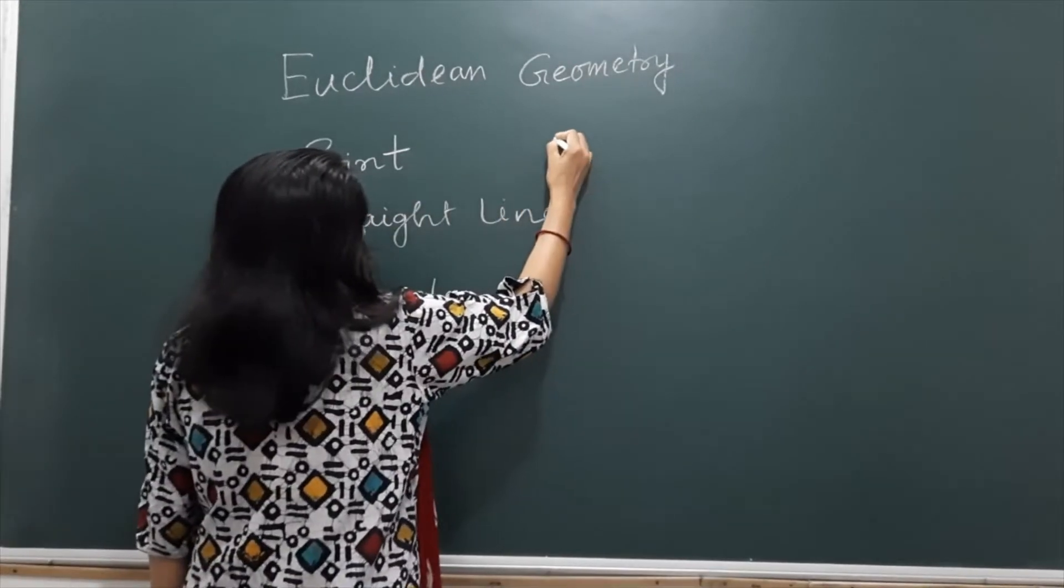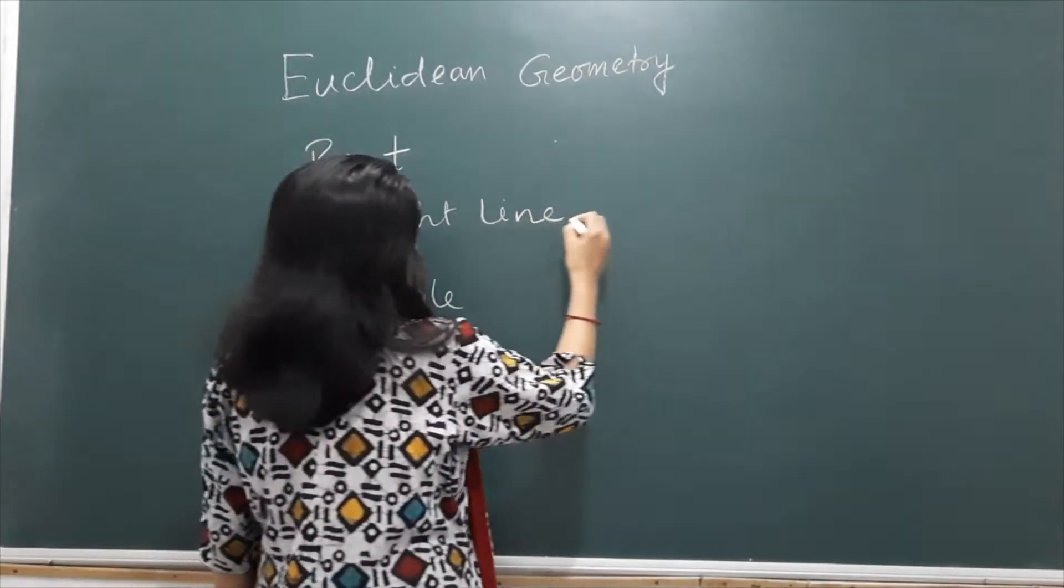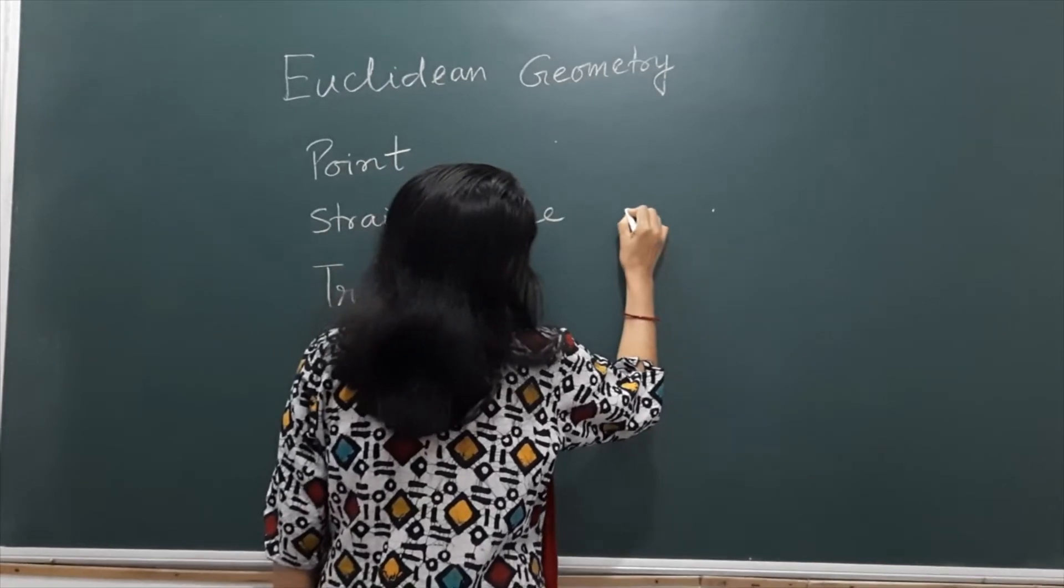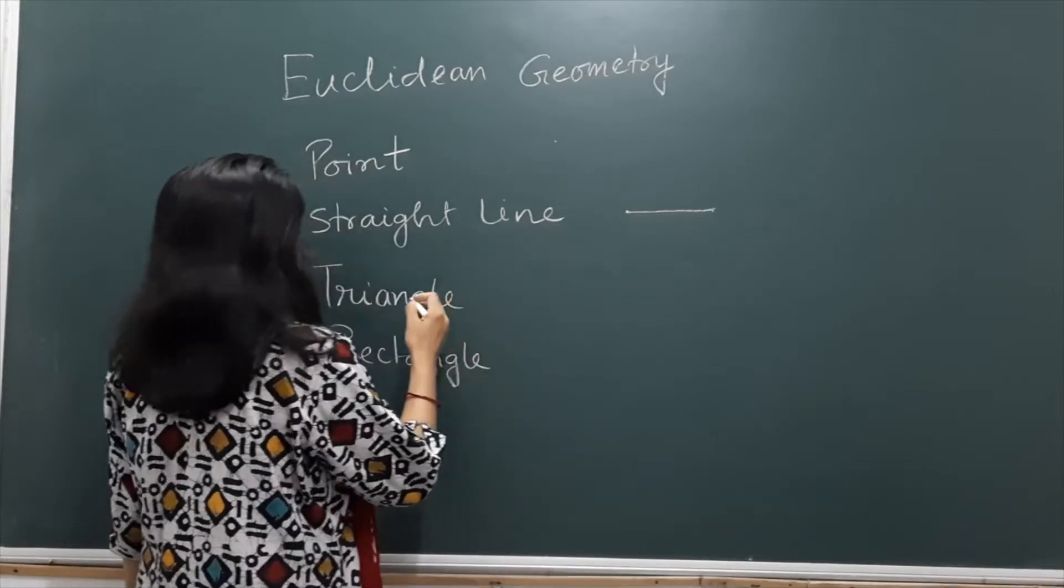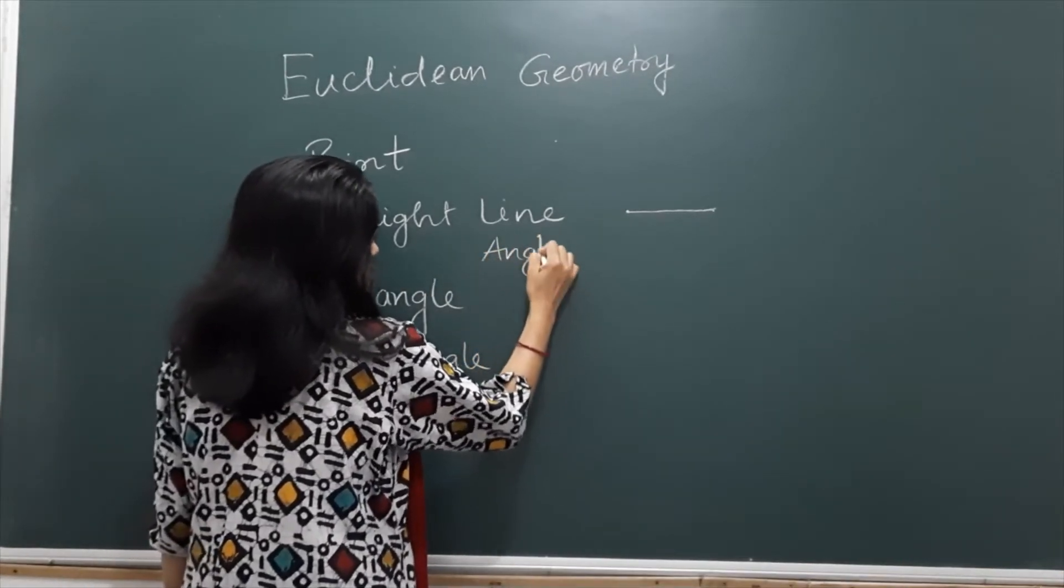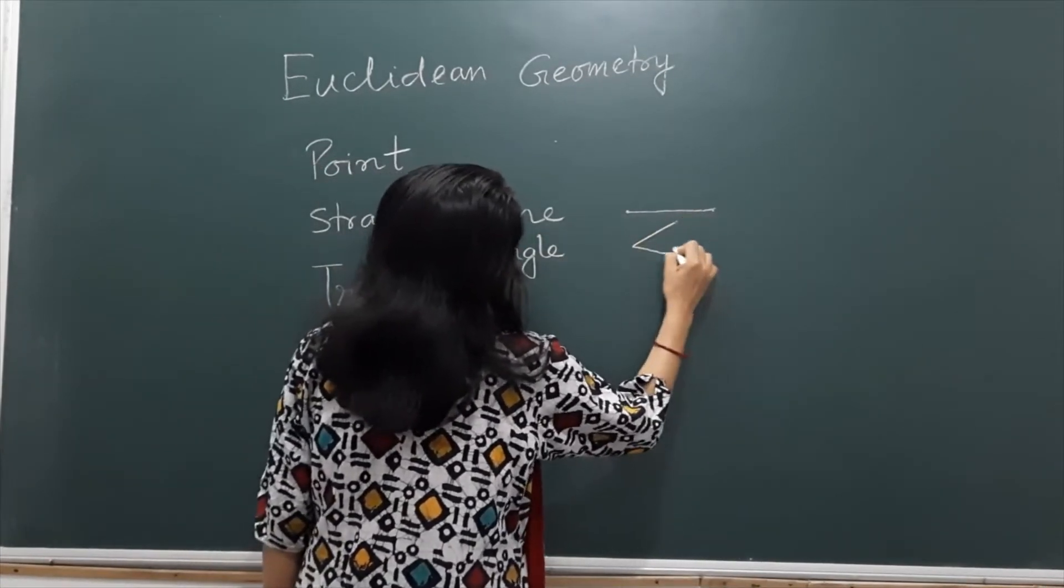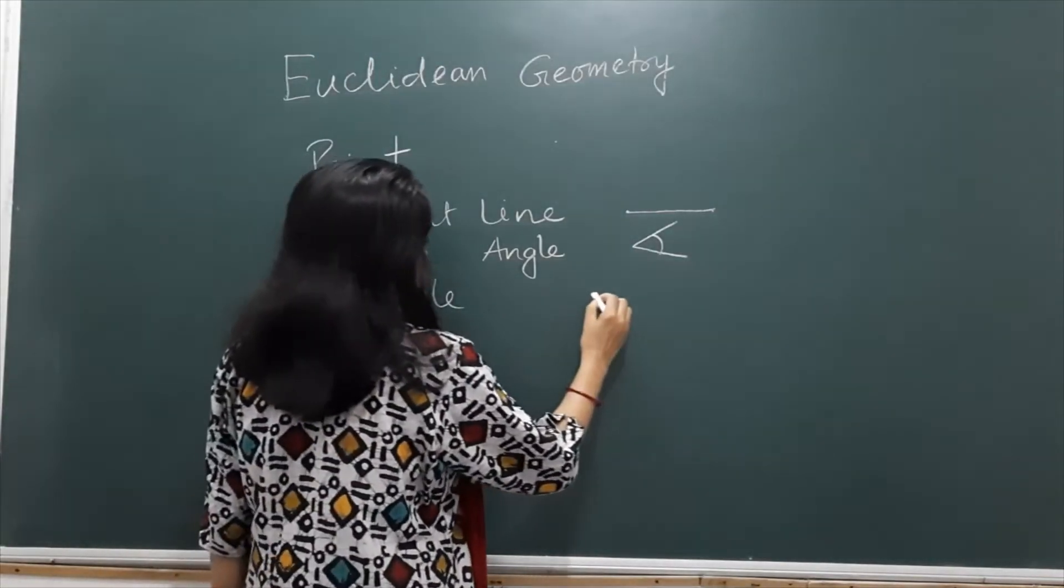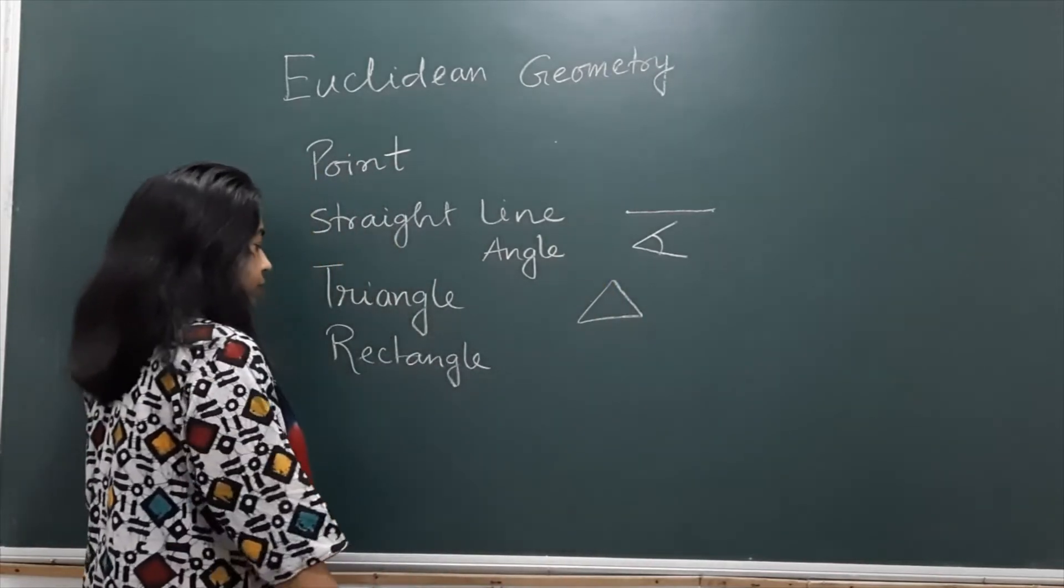A point which has no parts. Straight line can be drawn by two points. Triangle - we just try to understand, two straight lines make an angle, then triangle. Three straight lines make a triangle.